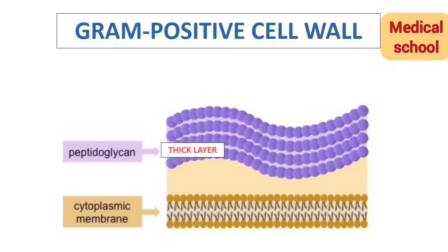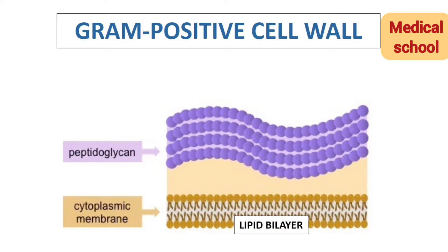Gram positive cell wall: in this kind of bacteria, cell wall consist of a thick layer of peptidoglycan and cytoplasmic membrane. Cytoplasmic membrane lipid bilayer hota hai, jis mein proteins bhi present hain.